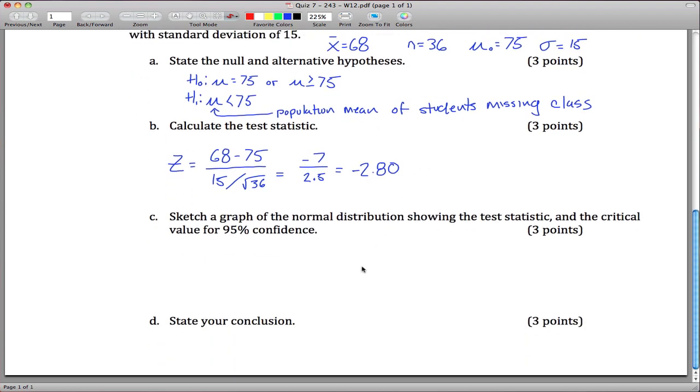Let's get a graph of the normal distribution. So you've got your normal distribution, something like that. And we want to show the critical value for 95% confidence. Our alternative hypothesis here is that mu is less than 75, so we're talking about this left-hand side of the distribution here.